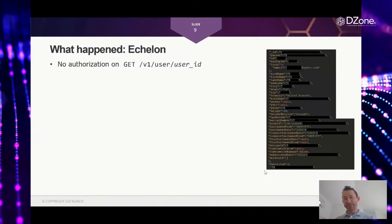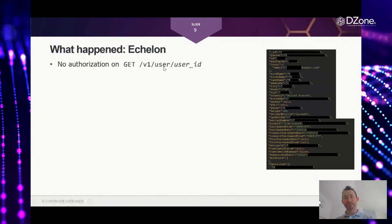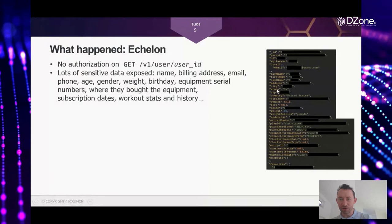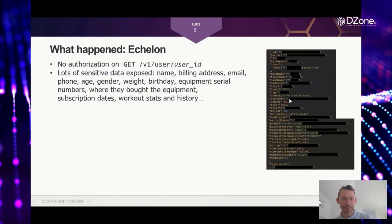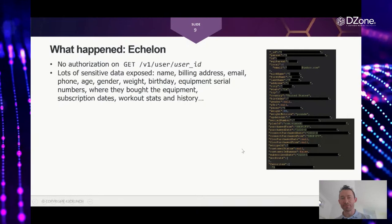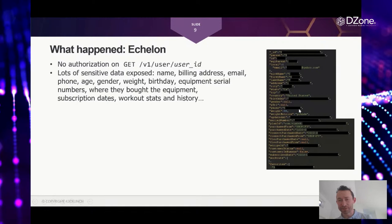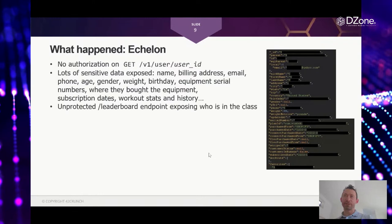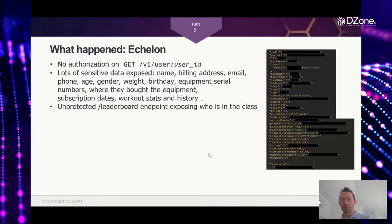Researchers also found other APIs beyond the main endpoint — including GraphQL endpoints — that they could access to get even more information. What made it worse: when researchers disclosed the vulnerability, the company didn't have any logging or monitoring capability to determine whether the flaw had ever been breached, or whether someone had already been collecting data while it was exposed. Similarly, Echelon had authentication on its user profile endpoint but no authorization, so with any user ID you could retrieve other users' data.